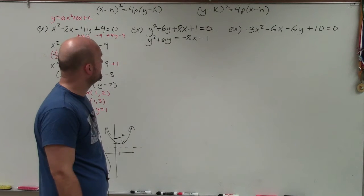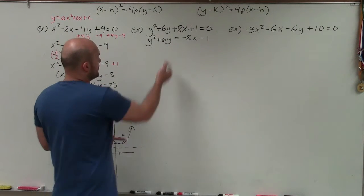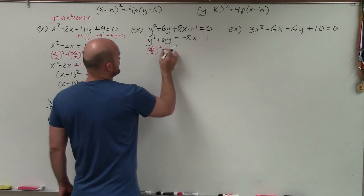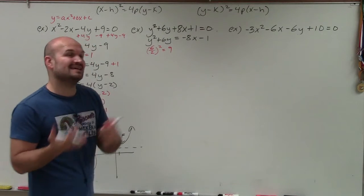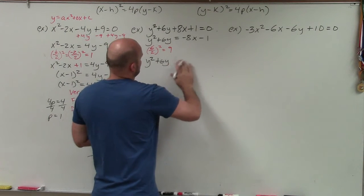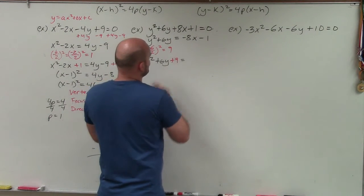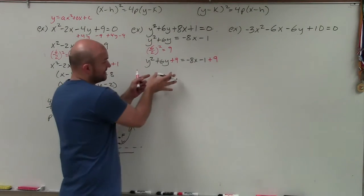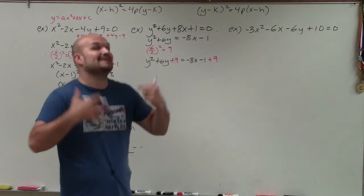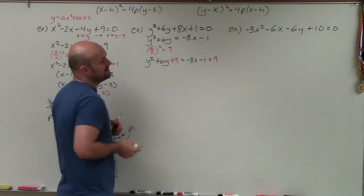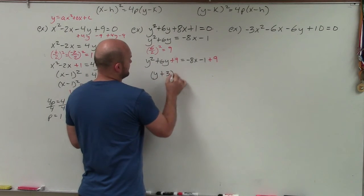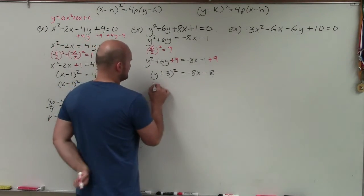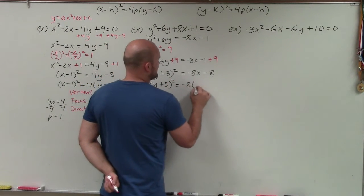Now complete the square. My b value is 6, so I do (6/2)² = 3² = 9. I add 9 to both sides, giving y² + 6y + 9 = −8x − 1 + 9. I've created a perfect square trinomial. What two numbers multiply to 9 and add to 6? That's 3. So the binomial squared is (y + 3)² = −8x + 8, which factors as (y + 3)² = −8(x + 1) after factoring out negative 8.